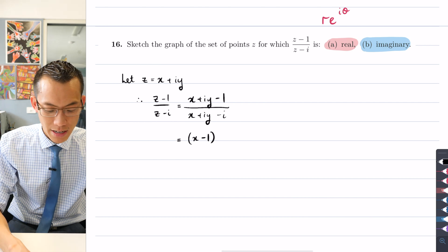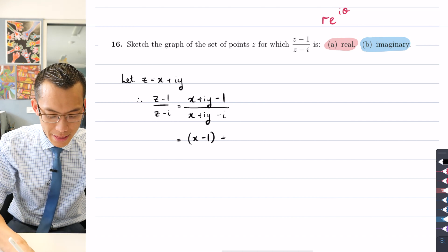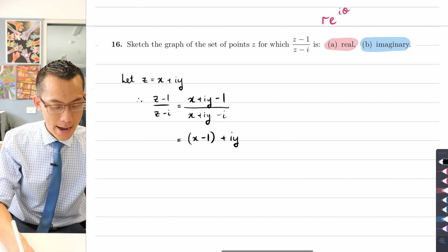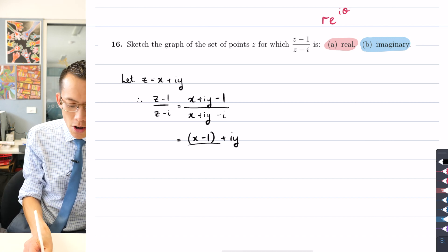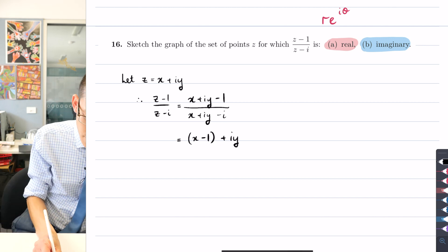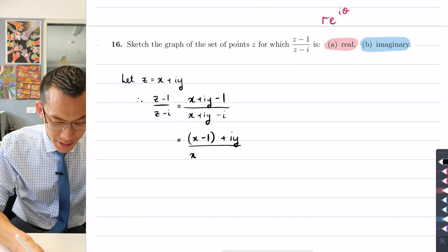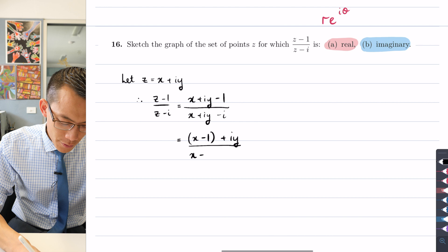So on the numerator I've got (x - 1), that's real, and then I've got iy, that's imaginary. And then on the denominator, that is a really wonky line there, I'm gonna have my x, that's the only real component.